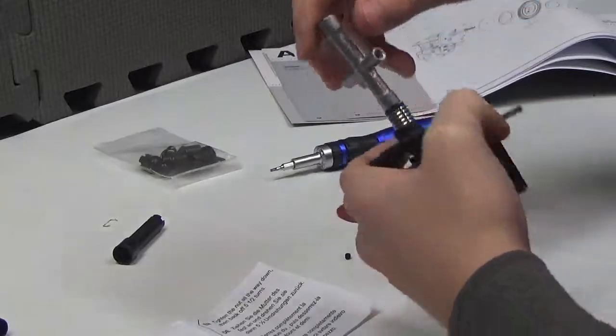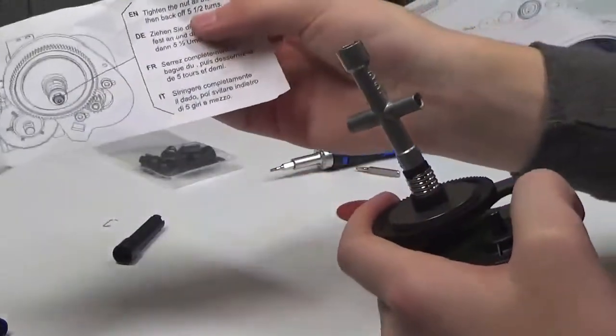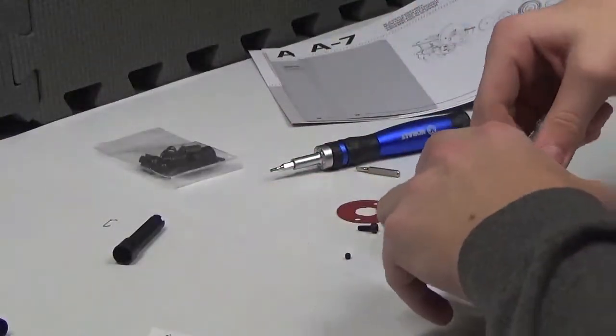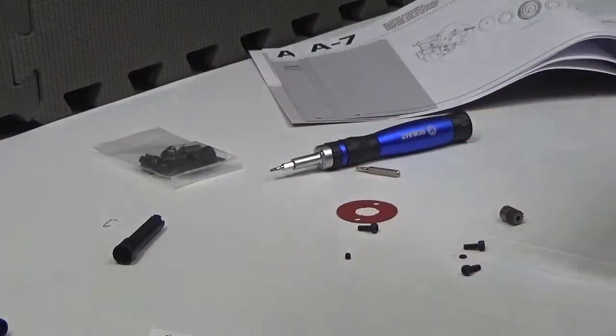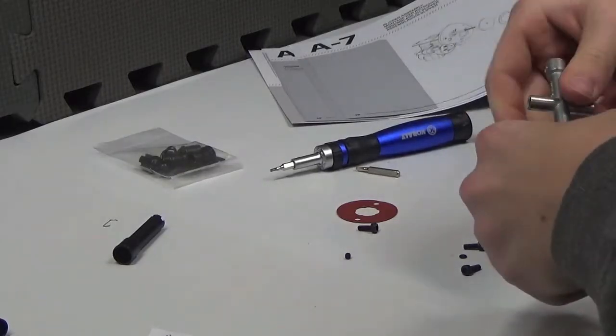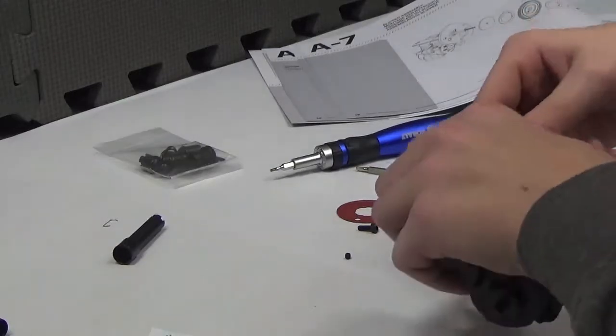Now, let's take this one. So now that we have it tightened all the way down, it says to back off five and a half turns. And so, all right, one, two, three, four, five and a half.